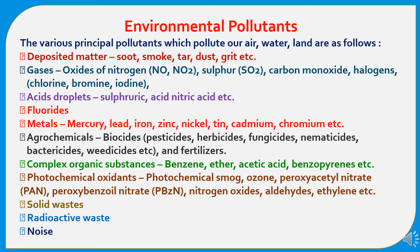The various principal pollutants which pollute our air, water, and land are as follows: deposited matter having soot, smoke, tar, dust, grit, etc.; gases — oxides of nitrogen, sulfur, carbon monoxide, and halogens; acid droplets like sulfuric acid and nitric acid; fluorides; metals — mercury, lead, iron, zinc, nickel, tin, cadmium, chromium; agrochemicals — biocides like pesticides, herbicides, fungicides, nematicides, bactericides, and fertilizers; complex organic substances like benzene; photochemical oxidants like photochemical smoke, ozone, and peroxyacetyl nitrate; solid wastes, radioactives, and noise.